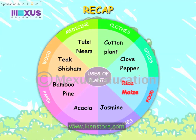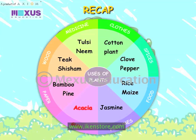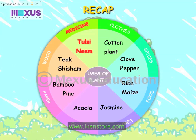Rice, maize — we get food. Jasmine — we get perfumes. Acacia — we get gum. Bamboo, pine — we get paper. Teak, shisham — we get wood. Tulsi, neem — we get medicine.